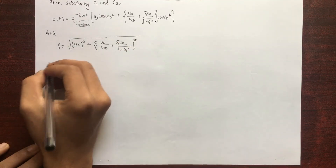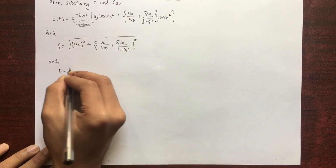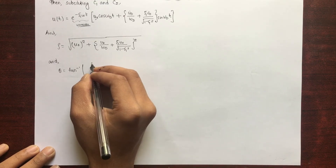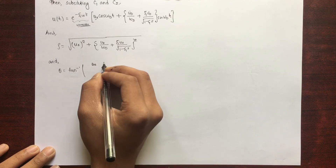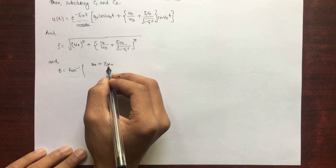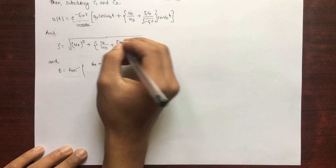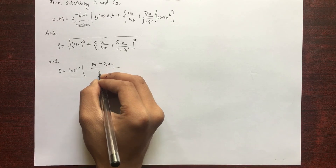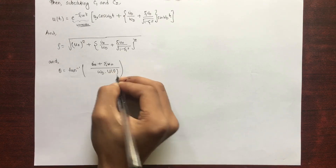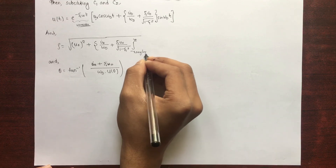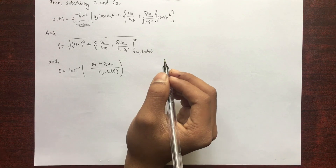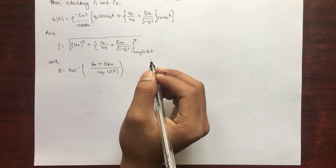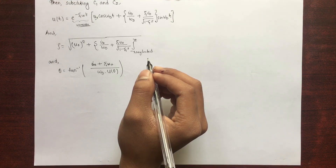Now we find the phase angle θ = tan⁻¹(B/A). Substituting: B = [u̇(0) + ξ·u(0)] / ω_d, and we neglect √(1 − ξ²) in the denominator because ξ is very small, making it nearly equal to 1. Divided by A = u(0). So we have obtained the value for θ as well. We will see a numerical example in the next video. Thank you — do like and subscribe.